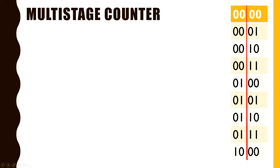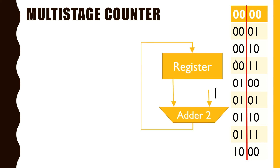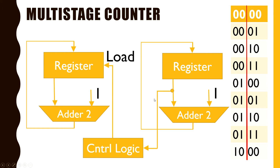Now let us observe the 2 MSB bits. It is also a 2-bit binary counter which increments its value when the 2-bit LSB counter overflows. This unit is a 2-bit MSB counter which increments its value when there is an overflow on the first stage of the counter, and this overflow is detected by the counter.